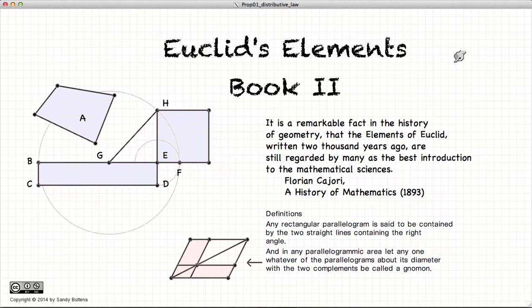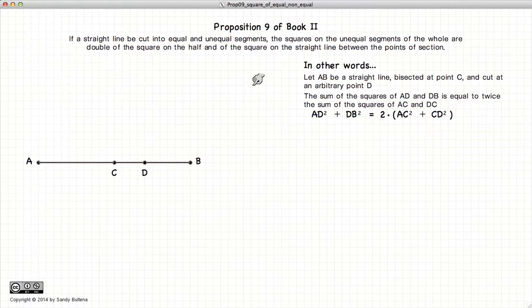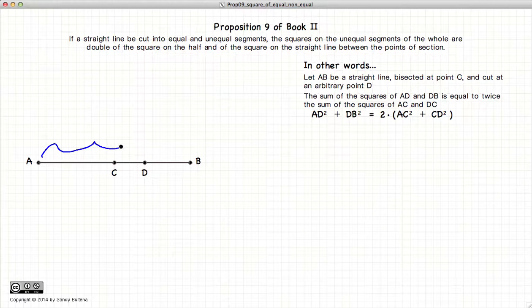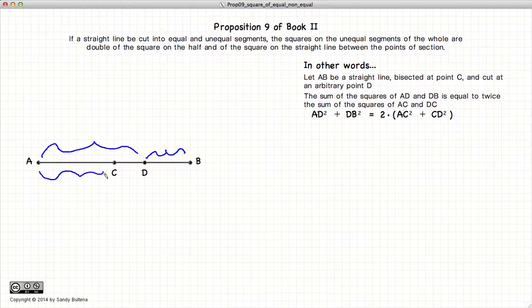Hi, and welcome to my tutorials on Euclid's Elements Book 2. This video presentation is going to be on Proposition 9 of Book 2, which states that if we have a line AB bisected at point C and cut at an arbitrary point D, then AD squared plus DB squared will be equal to twice AC squared plus CD squared.